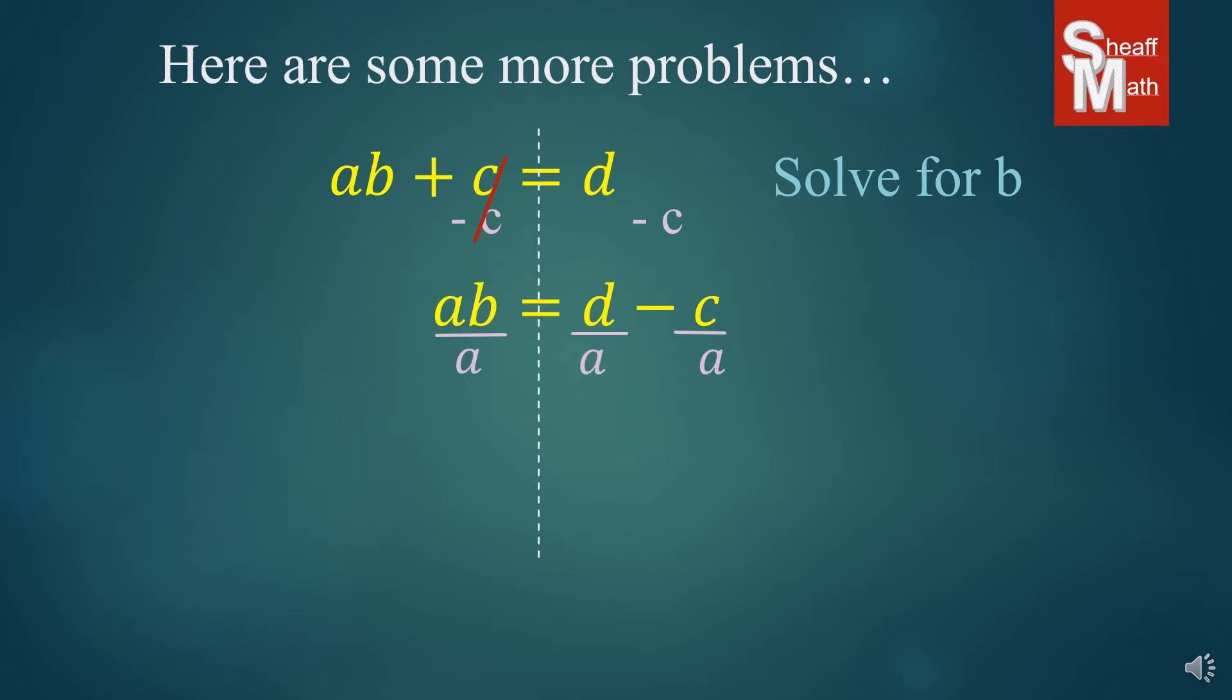By dividing A on both sides we cross out the A and we get B equals D over A minus C over A. Now this can also be written as D minus C all over A. It just depends on how you divide that A since there's no simplifying that's going to occur in this problem. Either way is okay.